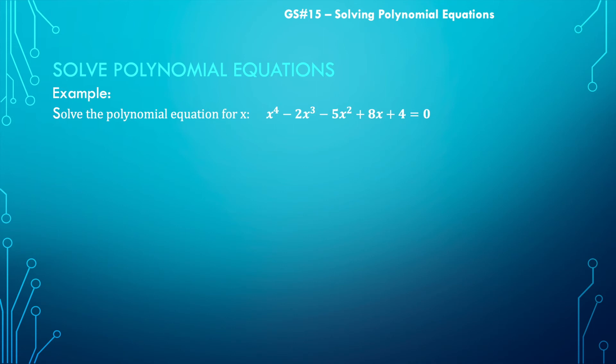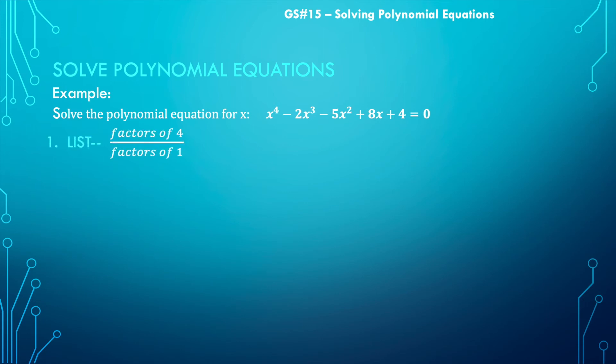This one is phrased a little differently: solve the polynomial equation for x. We have an equation set equal to zero instead of just a function. But remember, finding the zeros of a function means setting it equal to zero and solving for x — so it's really the same thing, and we use the exact same process. Let's start by listing our factors to find all possibilities.